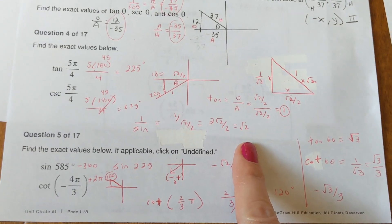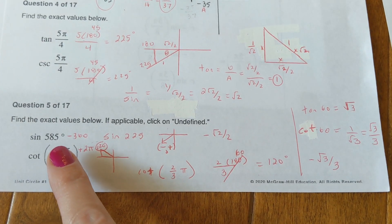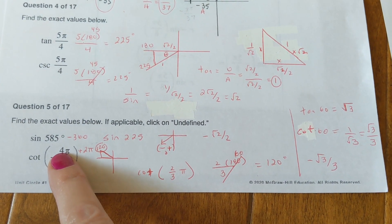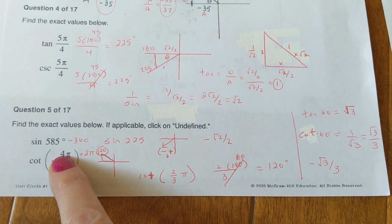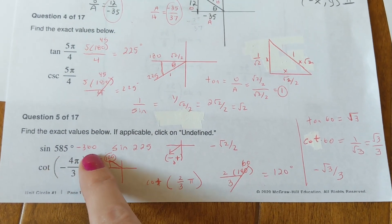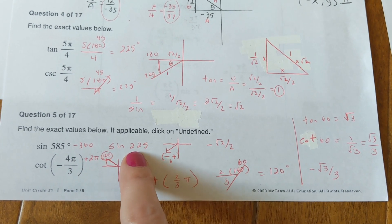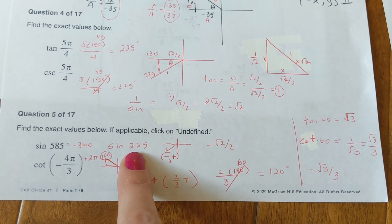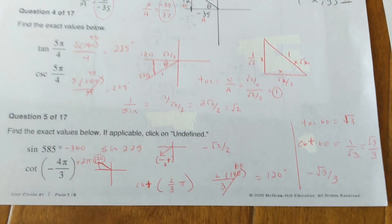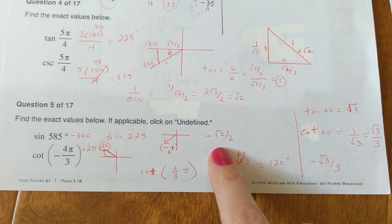They want the exact value of the sine of 585. That's outside that range of a unit circle of 360 degrees. So we learned to subtract 360 or add it until you get a number within between 0 and 360. And it makes it the sine of 225, which on our unit circle then gives us that answer of negative radical 2 over 2.